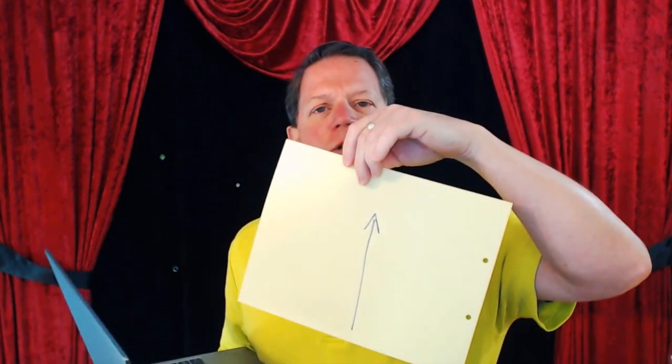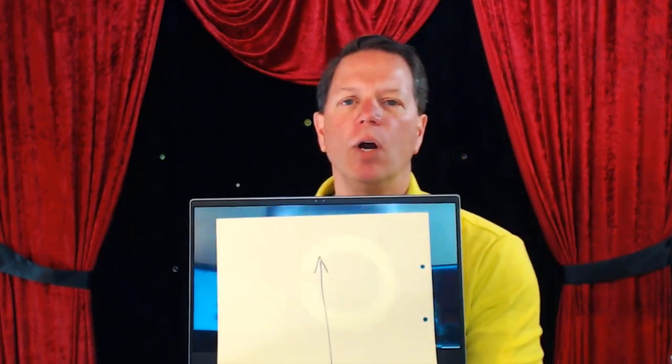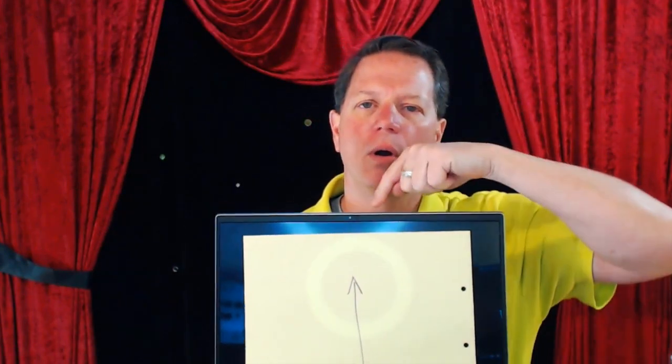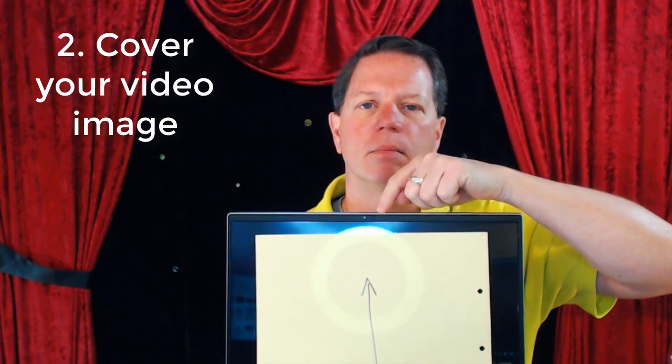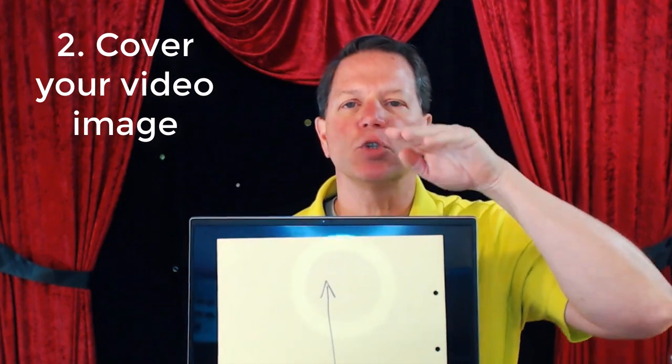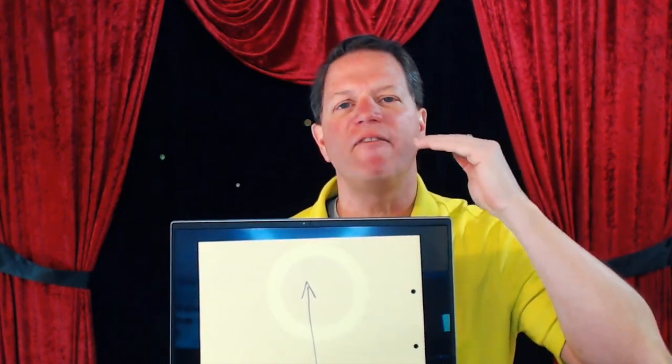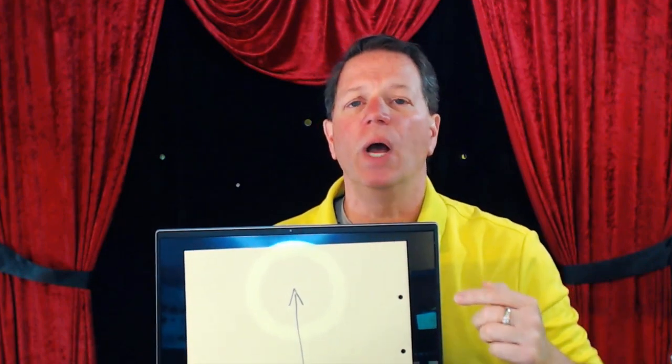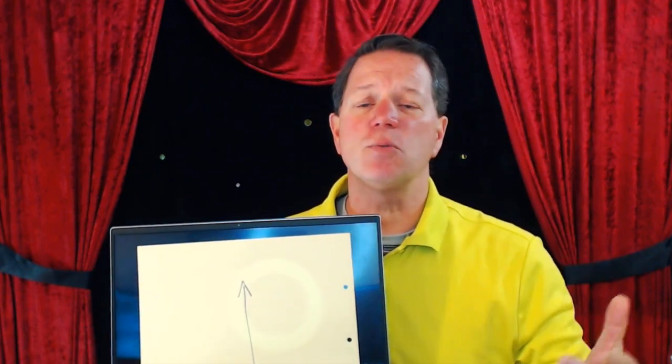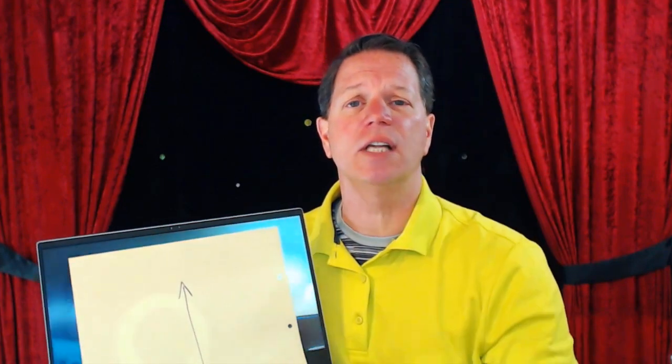Step two: take a sheet of paper and draw an arrow on it. This serves two purposes. One, you're going to cover up your picture of yourself — you do not need to see what you look like. Two, the arrow reminds you where you should be looking. That helps you keep direct eye contact and stay focused with the person you're talking to.